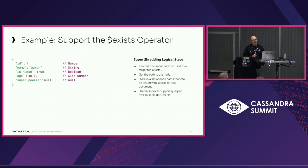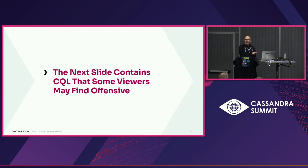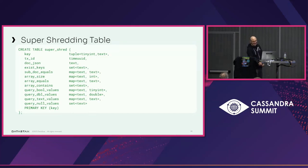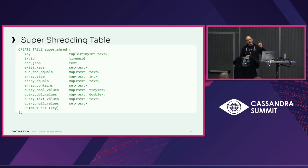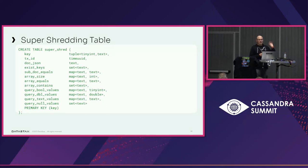For the $exists clause, we put paths into a set so we can test for field existence. We want to put everything into one row of CQL so the SAI query planner can do its job — it's actually pretty good at working out how to run those queries. So if we have a document with an 'isHuman' field, for $exists we store a set containing 'isHuman' and then query: WHERE exists_keys CONTAINS 'isHuman'.